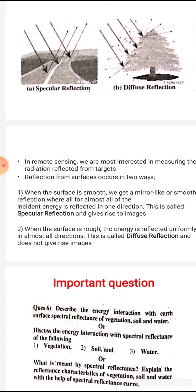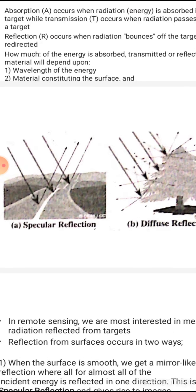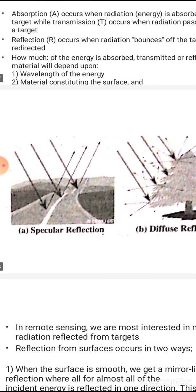Reflection from objects is of two types: specular reflection and diffuse reflection. When the surface is smooth, we get a mirror-like reflection where almost all of the incident energy is reflected in one direction. This is specular reflection, and remote sensing images are possible with the help of specular reflection.